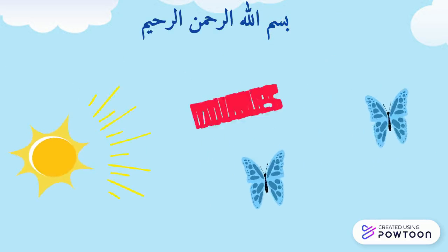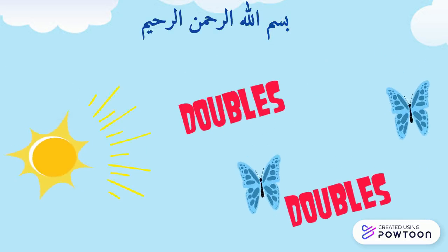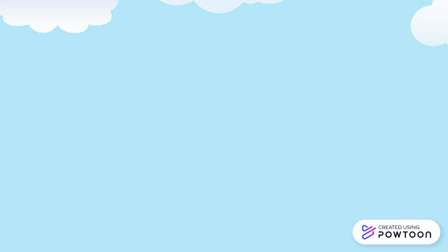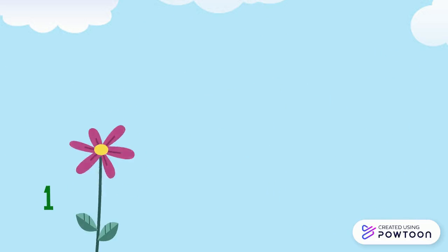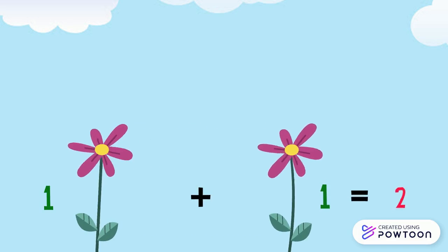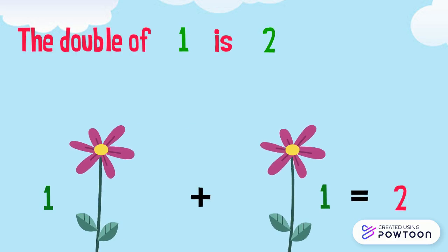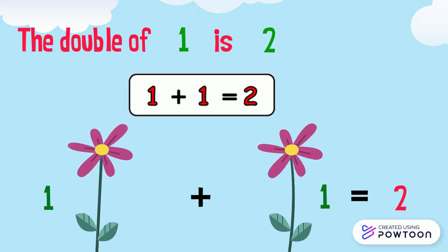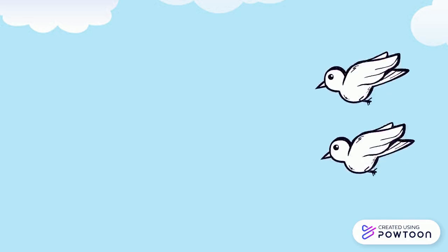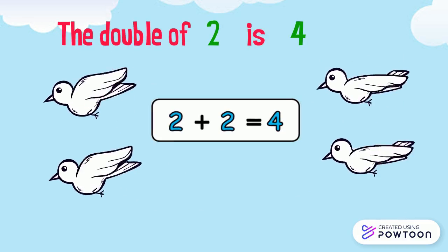How to find the double of a number? The double of a number is to repeat the same number twice. For example, the double of 1 is 2: 1 plus 1 equals 2. The double of 2 is 4: 2 plus 2 equals 4.